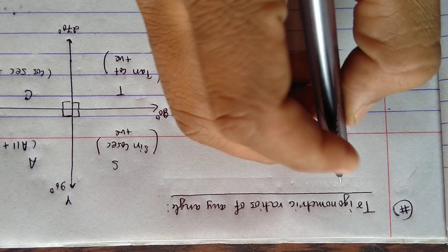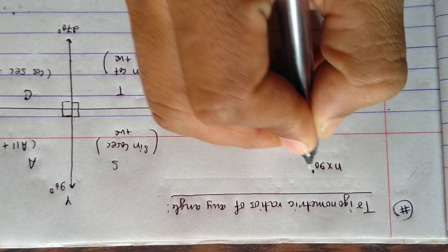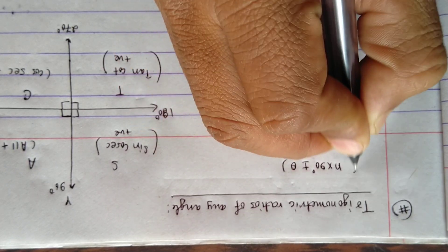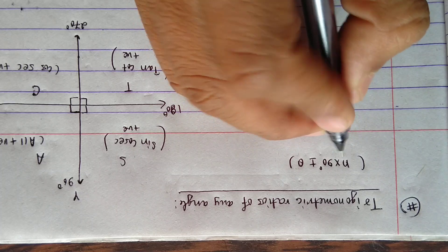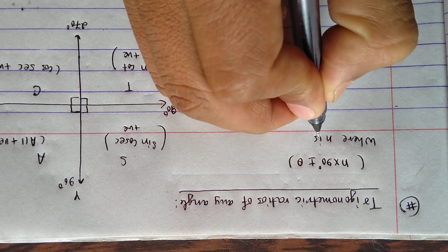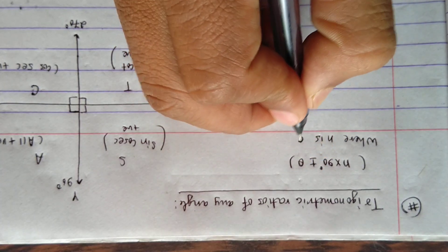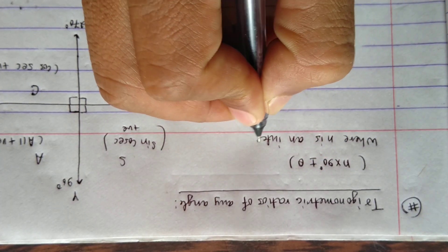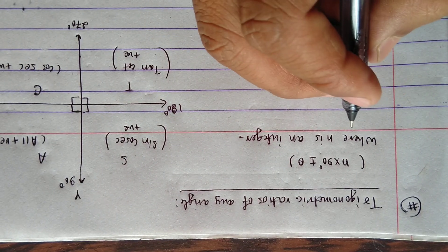Now any trigonometric ratios can be expressed in the form of n into 90 plus or minus theta, where n is an integer.